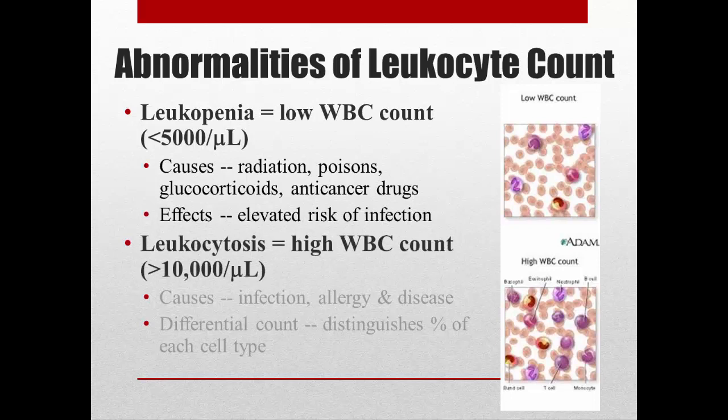Leukocytosis means high white blood cell counts. This can be caused by infection — white blood cells multiply to deal with it — or by allergies as a hypersensitivity response, or by cancers where white blood cells are trying to eliminate tumor cells. A differential count can help distinguish what kind of disease you have. For example, in a parasitic infection you'd expect high eosinophils; in a bacterial infection you'd see higher neutrophils and monocytes.